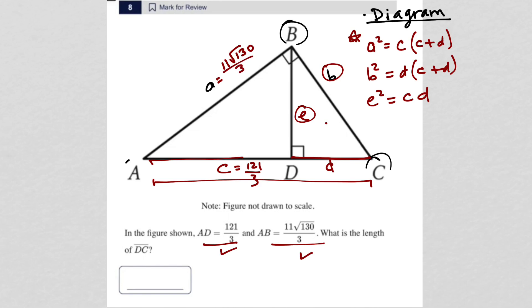And then the question asks, what is the length of DC? So that's the D value. This is the part that I do not know. So I am going to use this first one, right? I have enough information to use that first one.